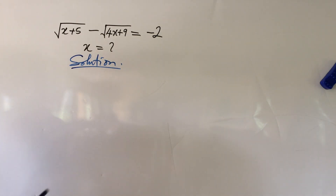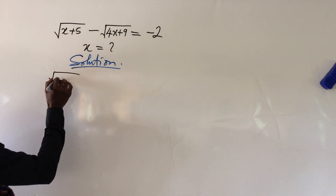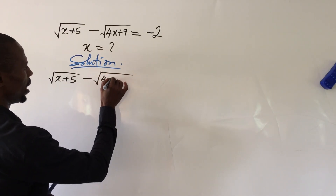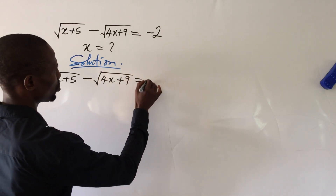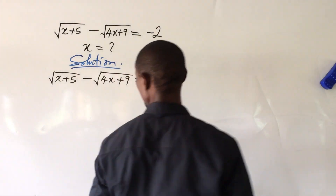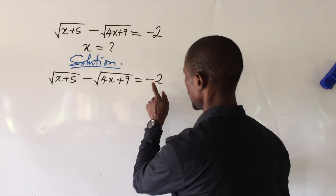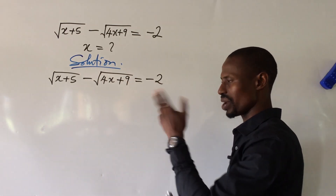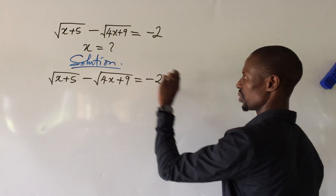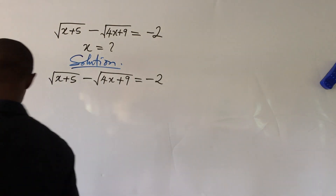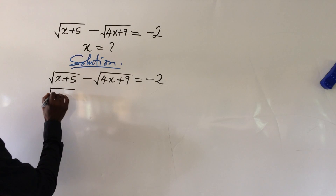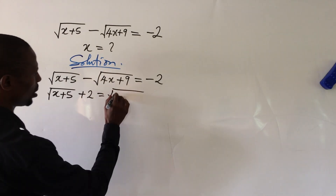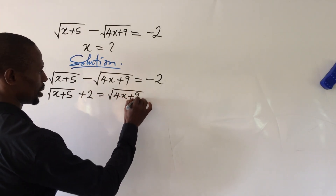We put down our equation: root(x + 5) minus root(4x + 9) equals minus 2. Now, this negative 2 is going to pose a challenge in the process of solving, so we have to rearrange. We move the second radical to the left and the minus 2 to the right, giving us: square root of (x + 5) plus 2 equals square root of (4x + 9).